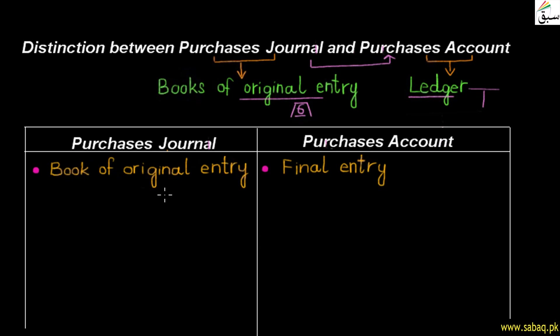The first difference is the name and classification. The purchases journal is one of the books of original entry, also called a special journal.